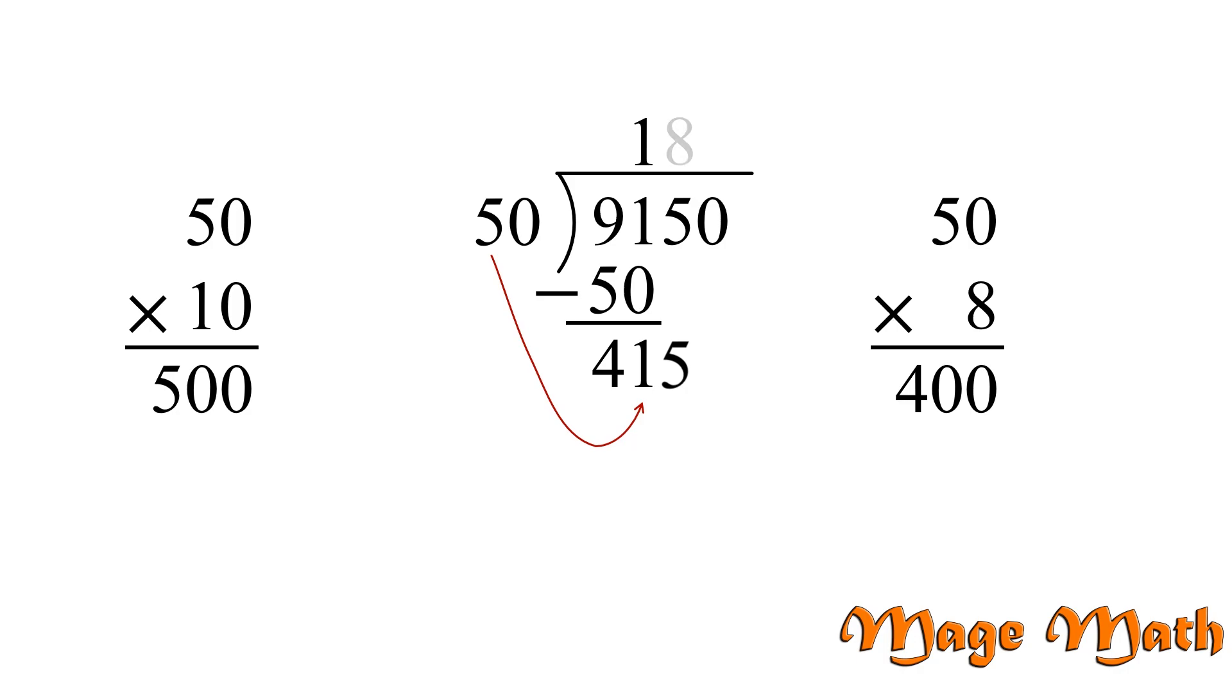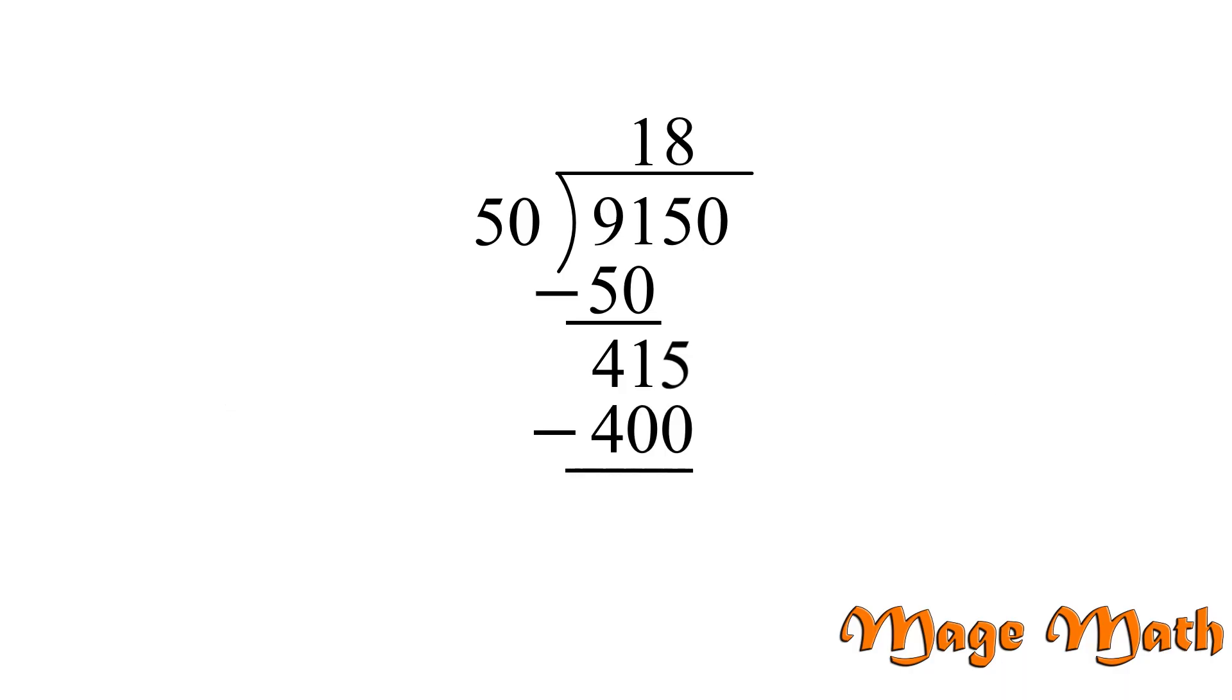Okay, so we write 8 above, and I know 8 times 50 is 400. We're going to draw a line and subtract. 415 minus 400 is 15. Our next step is to bring down the 0, and we're going to start over again. How many times does 50 go into 150? Well, that's 3 times, because 3 times 50 is 150. When we subtract, we get a remainder of 0. So we found 9,150 divided by 50 equals 183.